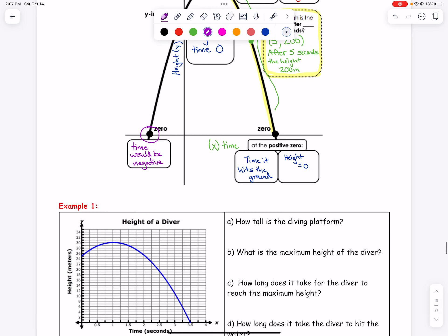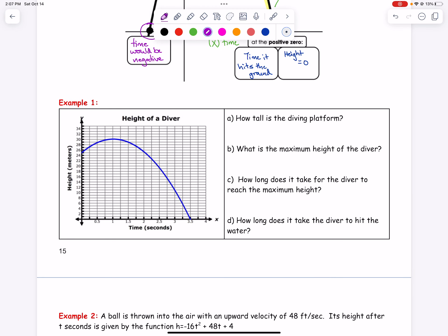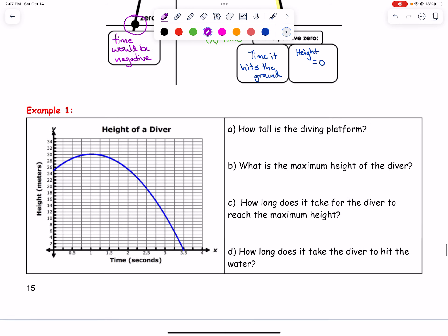For example one, let's take a look at the height of a diver. We have height on our y-axis and time in seconds on the x-axis. It asks how tall is the diving platform. You can tell from the graph that the diving platform would be where the diver starts—that's your y-intercept. It looks like that is around 25 meters.